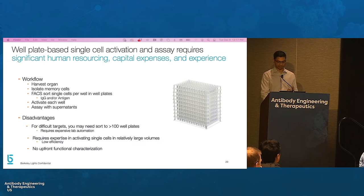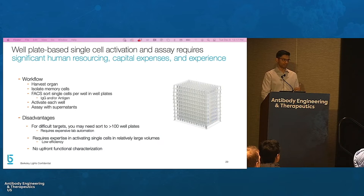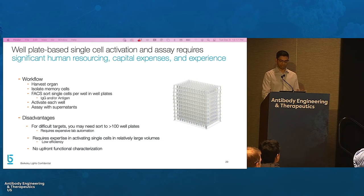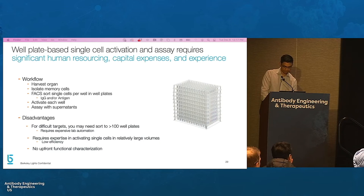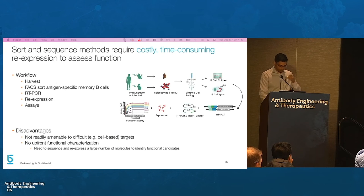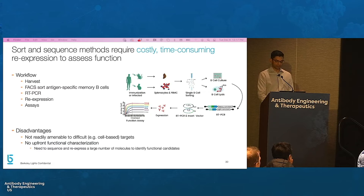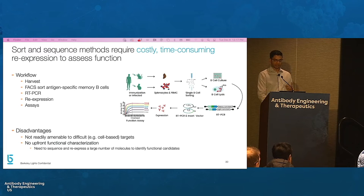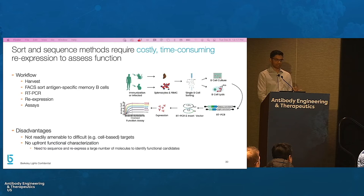Another approach to discovering rabbit antibodies is by single-cell sorting of memory B-cells followed by activation in plates. The secreted antibodies in the supernatant can then be assayed to discover antibodies of interest. However, throughput is a major disadvantage, and discovery against difficult targets may necessitate sorting over 100 plates, requiring significant time and expensive lab automation. Alternatively, antibodies can be discovered by sorting antigen-specific memory B-cells directly into PCR plates for amplification and sequencing, but this approach is not amenable to difficult targets such as those that cannot be expressed as soluble proteins, and the lack of upfront functional screening necessitates sequencing and re-expression of a large number of hits.